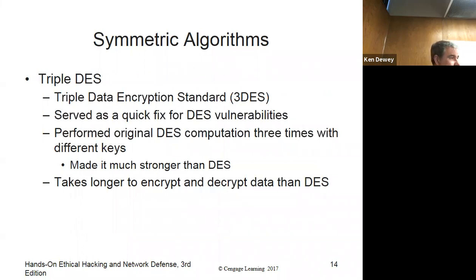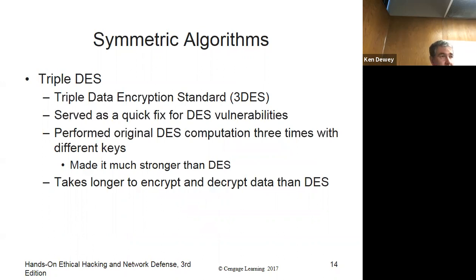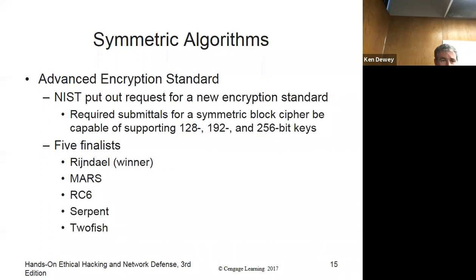Triple DES is like using DES three times: encrypt with one key, decrypt with a different key, then re-encrypt with the first key again. It's actually much better and still used today. It takes longer to encrypt and decrypt data than DES — obviously triple DES takes longer than single DES.